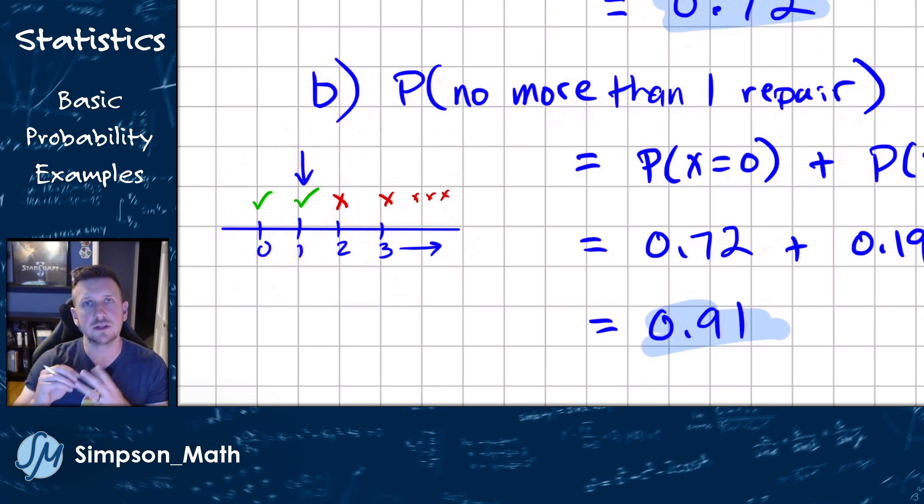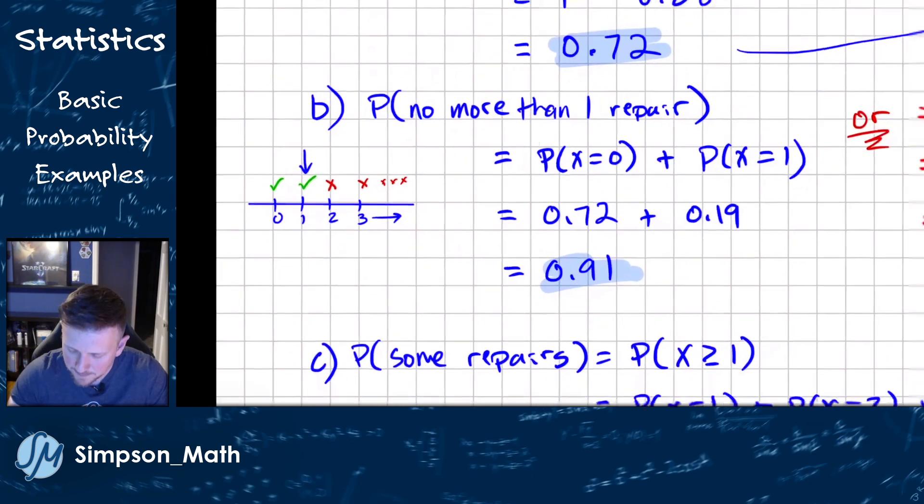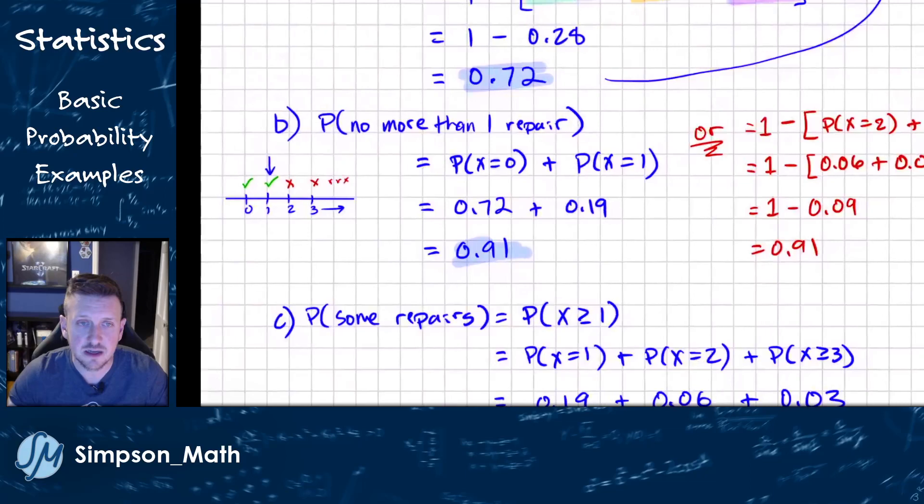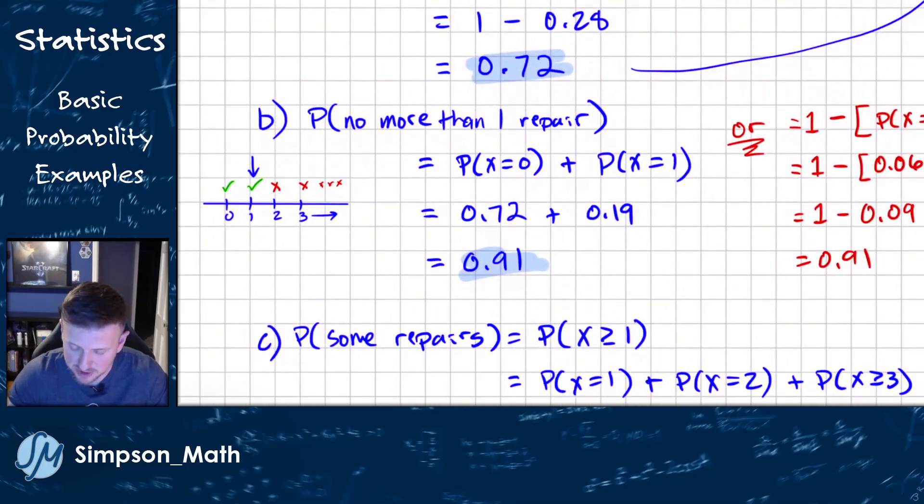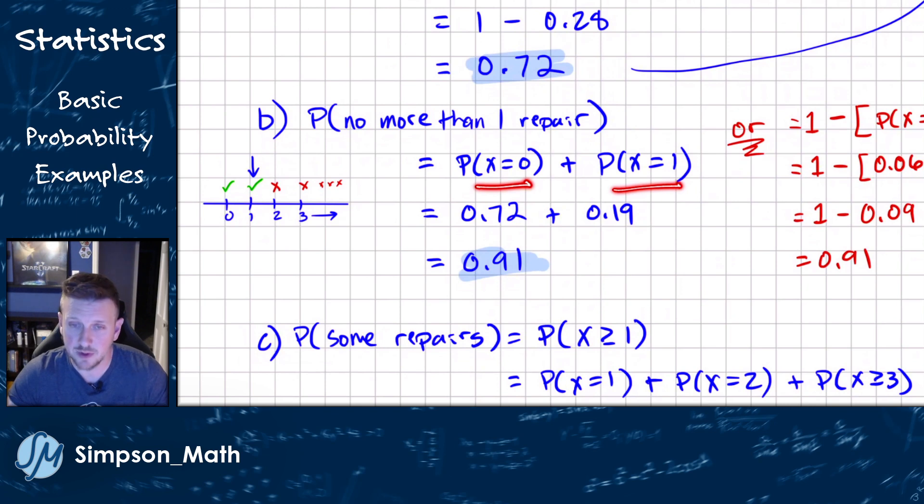I'm a tangible visual person. So I'll either draw this or visualize that in my head, or sometimes just like to imagine that these are three numbers on the number line, like a zero, one, and two. So since it's no more than one, I can just find the probability of zero and the probability of one and just add them up. We just found that the probability of zero was 0.72. We were given that if it gets repaired once, that's 19%. We just add them up and we get the 91% or 0.91.